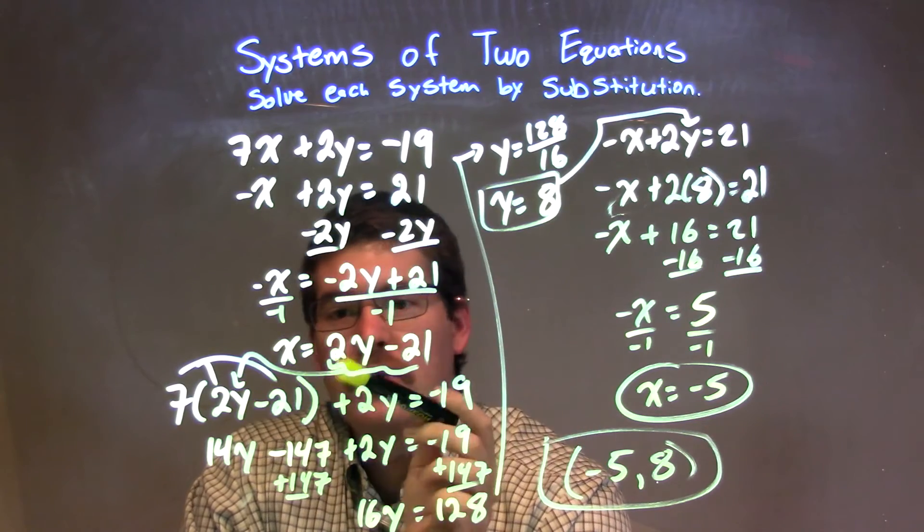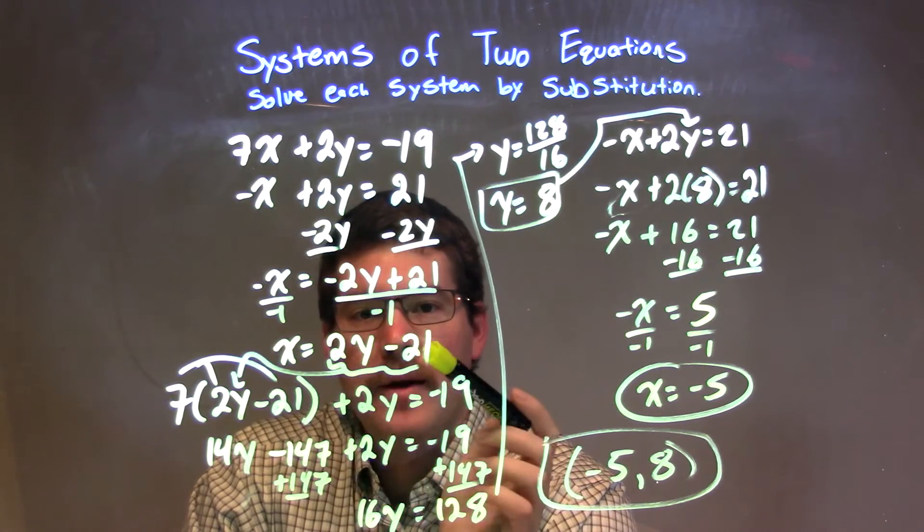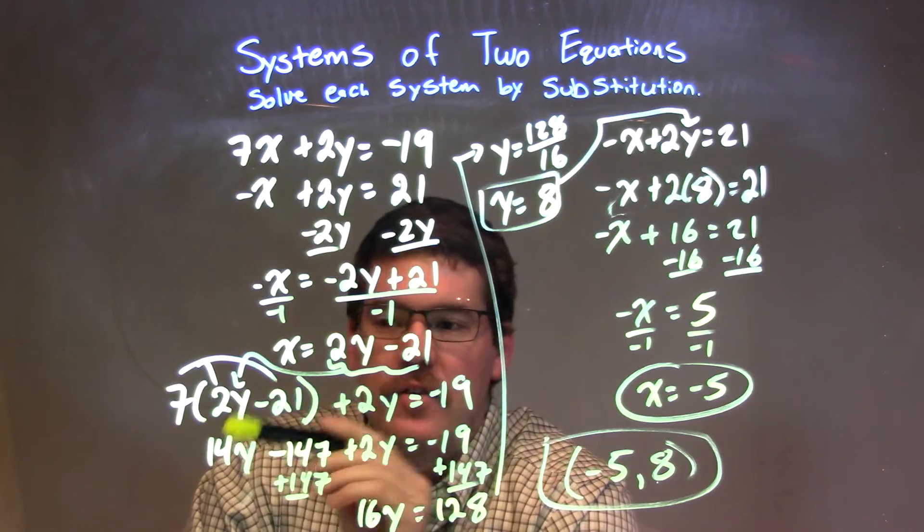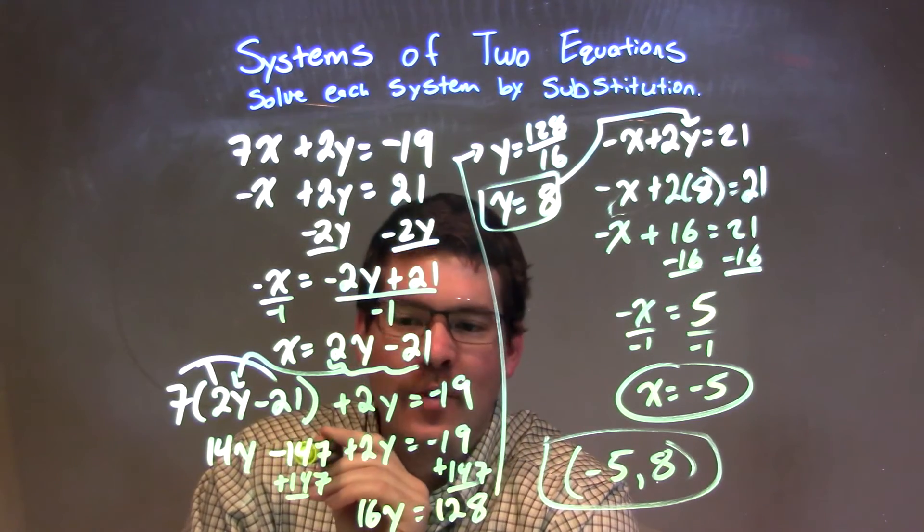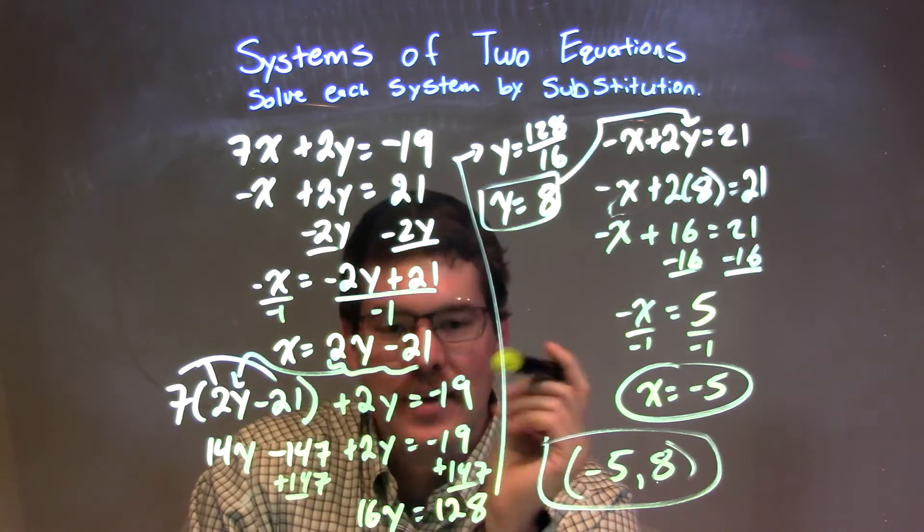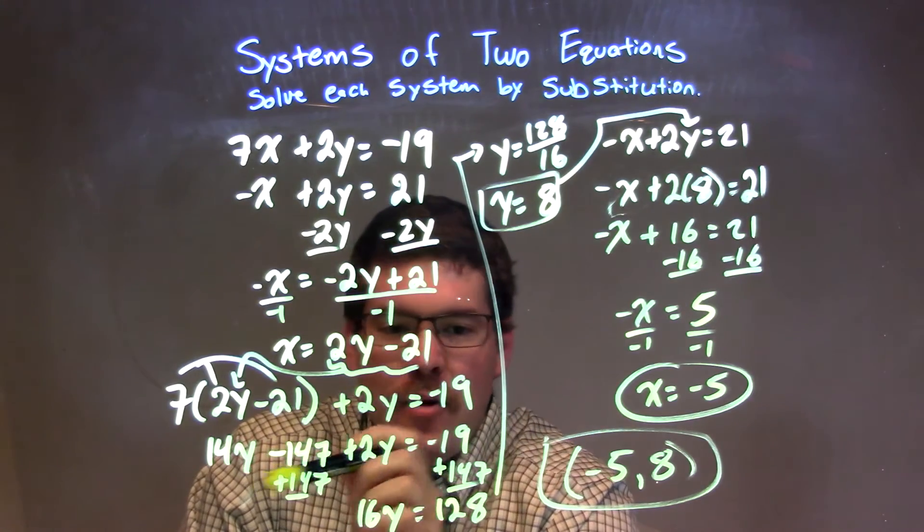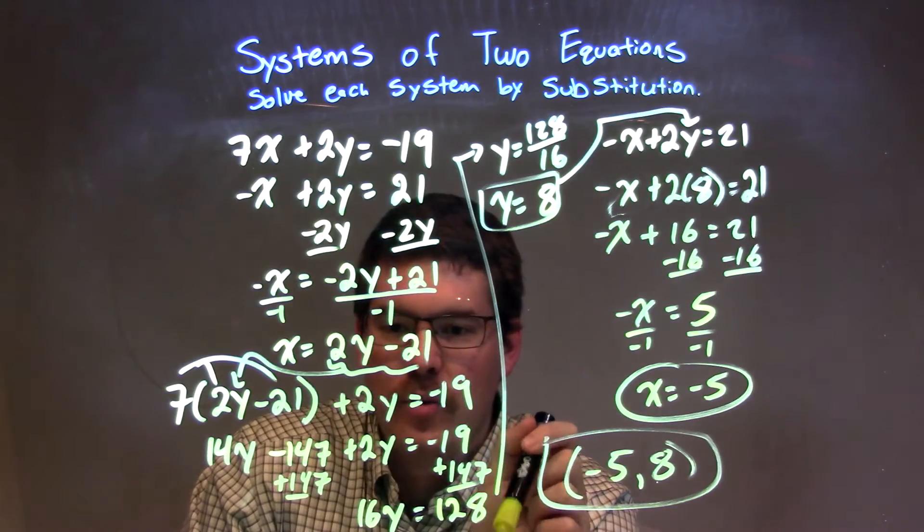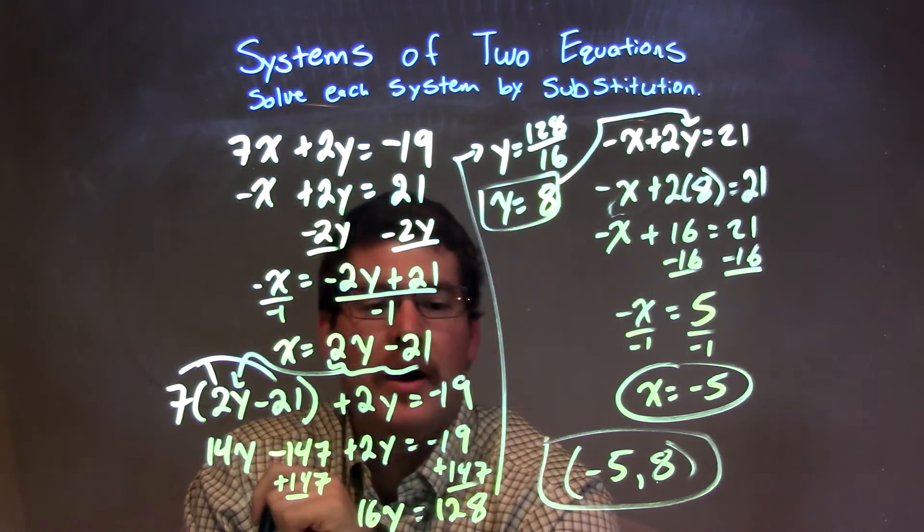From there, I substituted that into my first equation. So instead of x, I wrote 2y minus 21 right there. Simplified. I distributed 7 across, giving me 14y minus 147 plus 2y equals negative 19. From there, I added 147 to both sides, which I probably did in my head, but it's all good. I got 128, and combined 14y and 2y to be 16y.